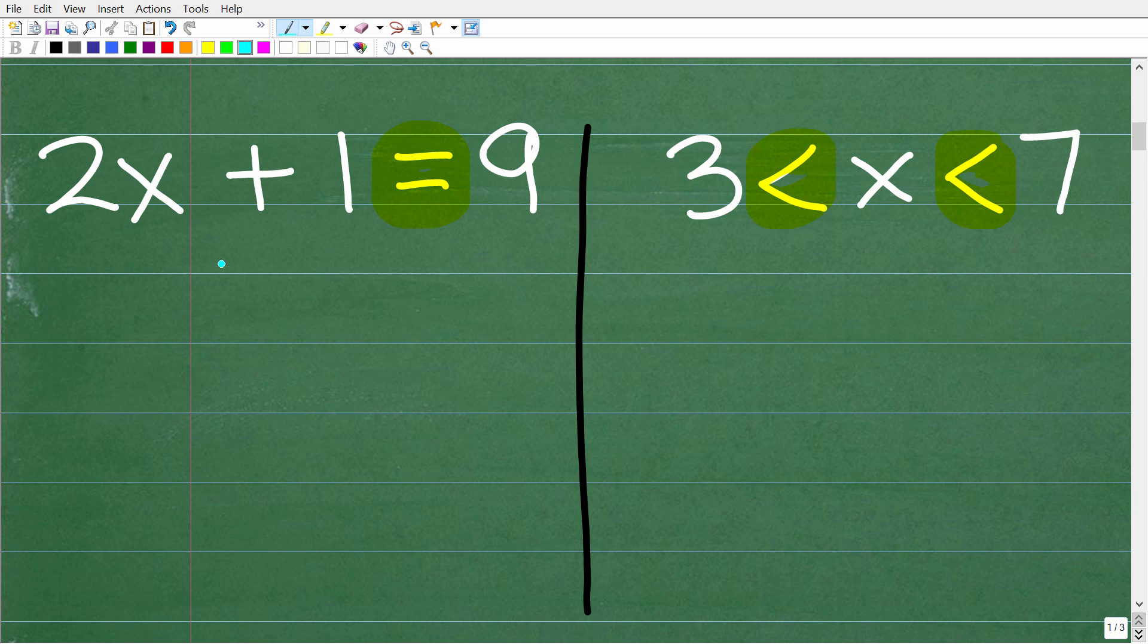Now, an equation is what? Well, what we're doing is equating one side of the equation to the other. So this statement right here, or this part of the equation 2x plus 1 is equal to 9.